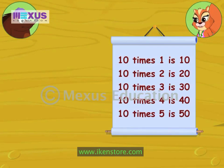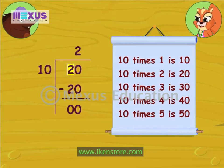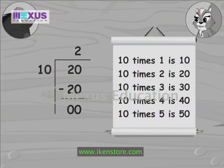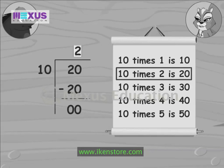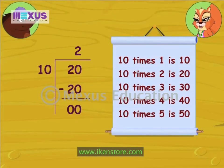Can you show me that using the long division method? As the first digit is smaller than 10, I consider both the digits. Using the table I know, 2 times 10 is equal to 20. That's great, Porky.